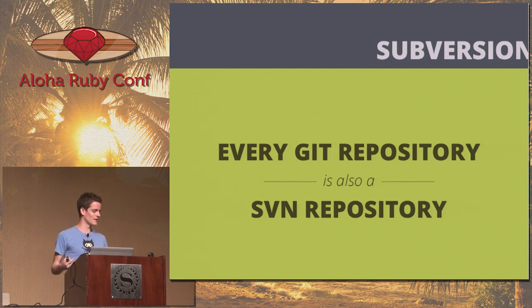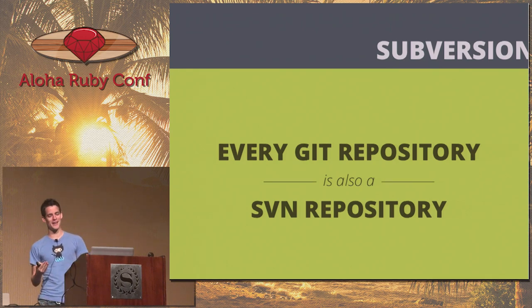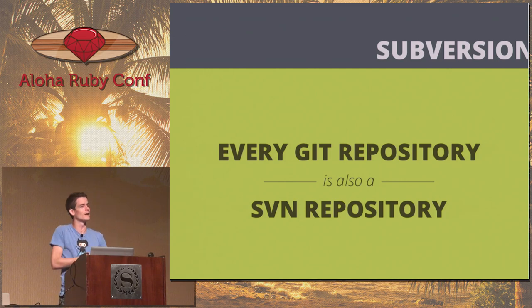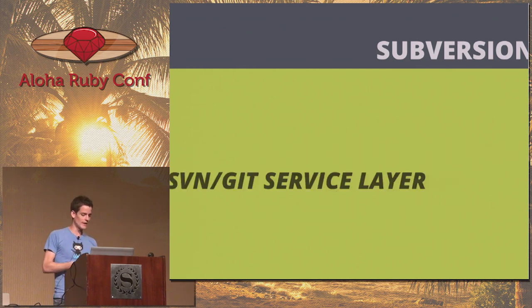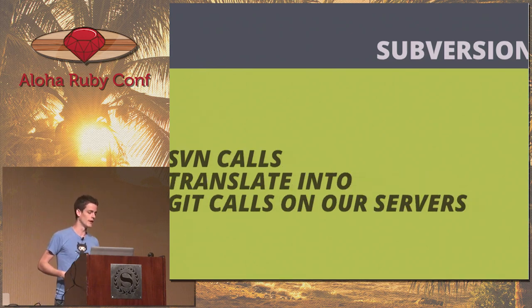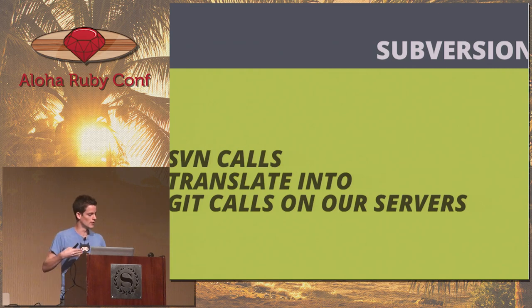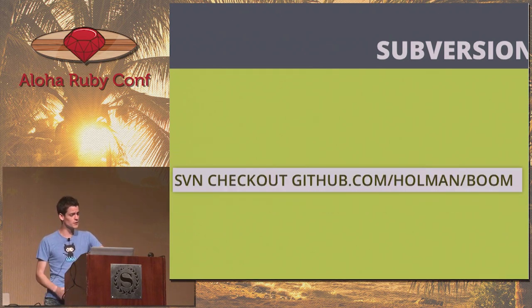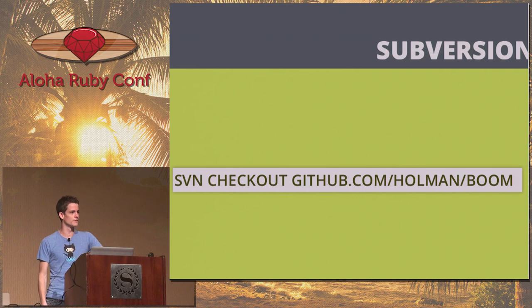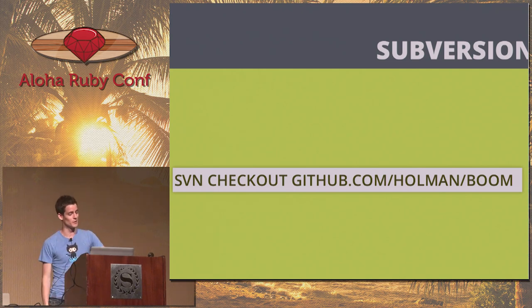Also, subversion. GitHub is the largest Git host online, but we're also the largest Subversion host online, because every single Git repository on GitHub is also a Subversion repository. We do this via a special SVN-Git service layer. When you send a Subversion call to GitHub, we translate those calls into Git calls on our servers. You can do svn checkout and pass it a GitHub repository, and we support almost all of the Subversion commands at this point.